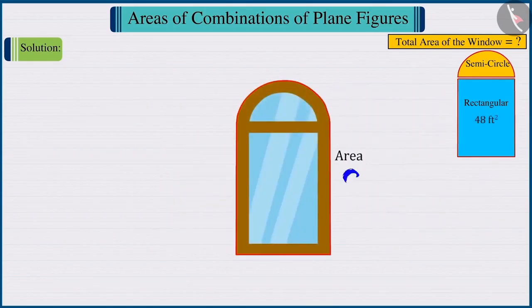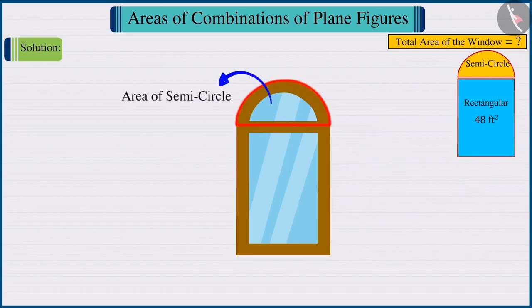Since we have to find the area of the whole window, we will have to find the area of the upper portion of the window, i.e., the semi-circle.